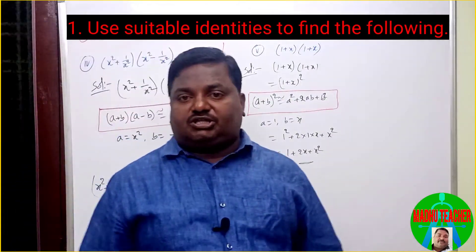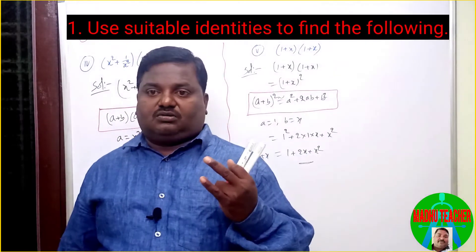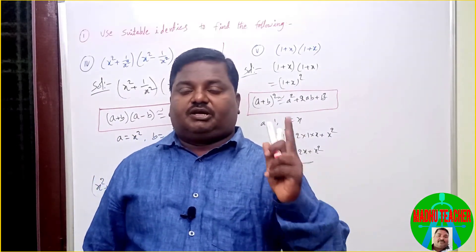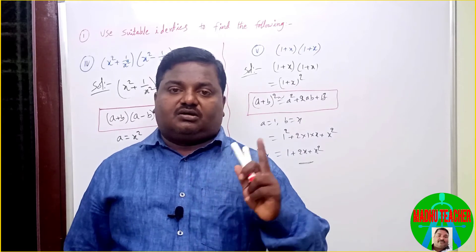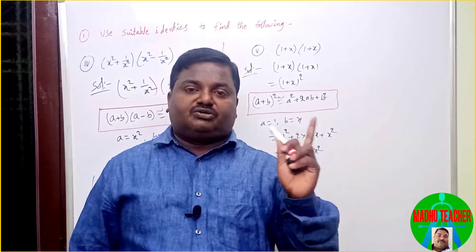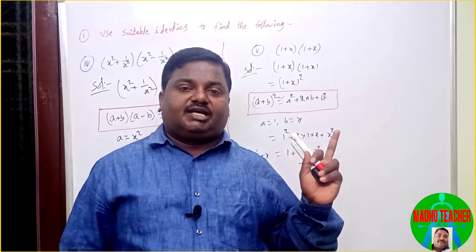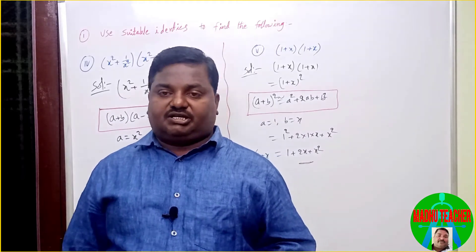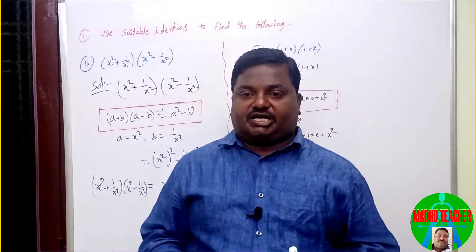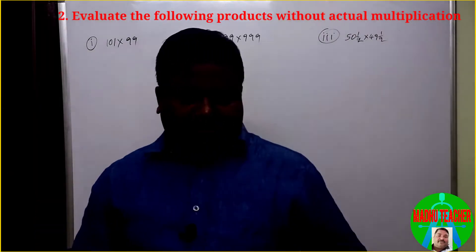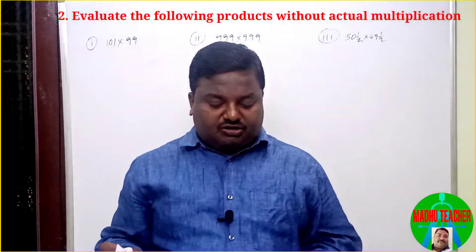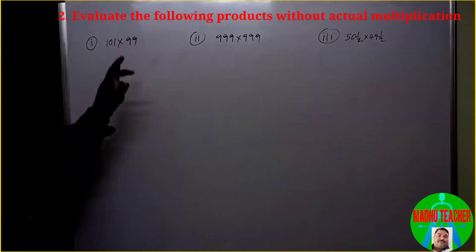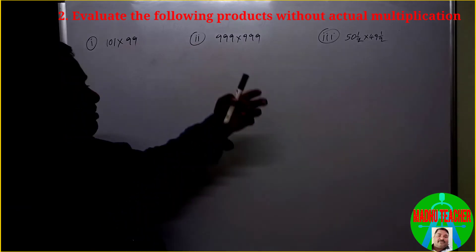In the first bit we used the identities: (a+b)², (a−b)², (a+b)(a−b), and (x+a)(x+b). Next, the second bit is to evaluate the following products without actual multiplication — find the product using identities.